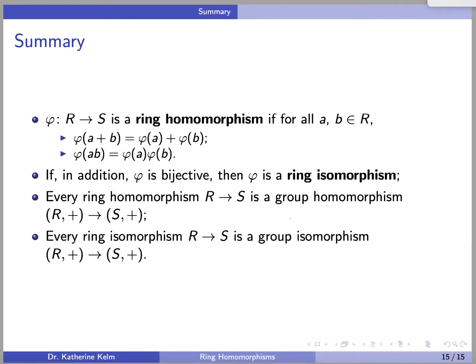To summarize: a function phi from R to S is a ring homomorphism if it preserves both the addition and the multiplication from the rings. If, in addition, phi is bijective, then phi is a ring isomorphism. We saw that every ring homomorphism from R to S is a group homomorphism on the underlying abelian groups, and similarly, every ring isomorphism is a group isomorphism on the underlying abelian groups. I hope you found this video helpful. Thank you.